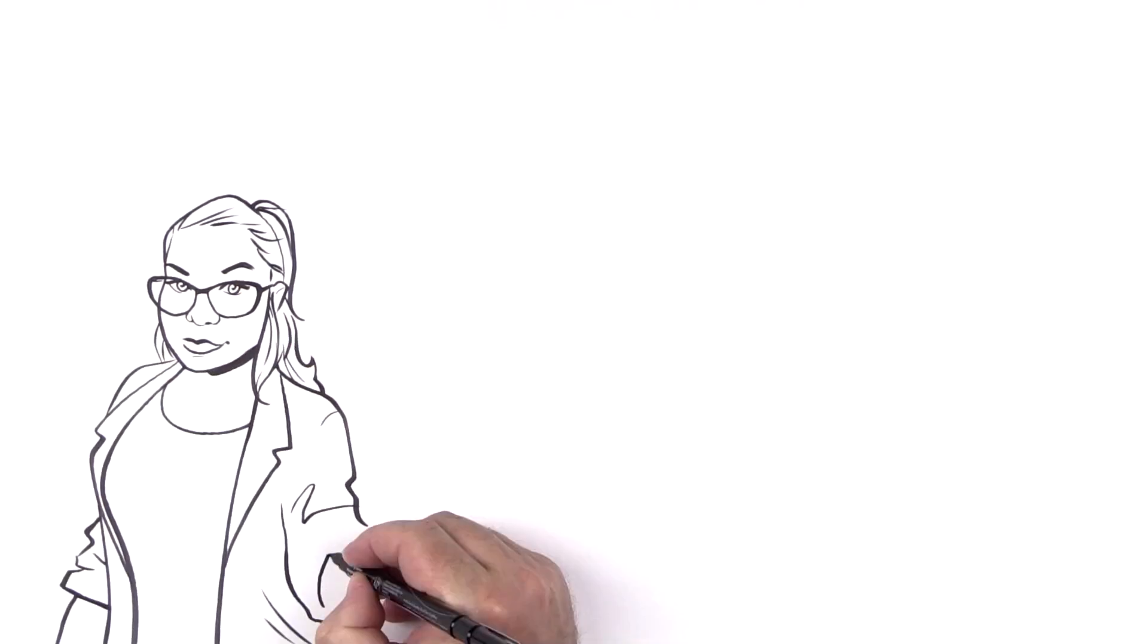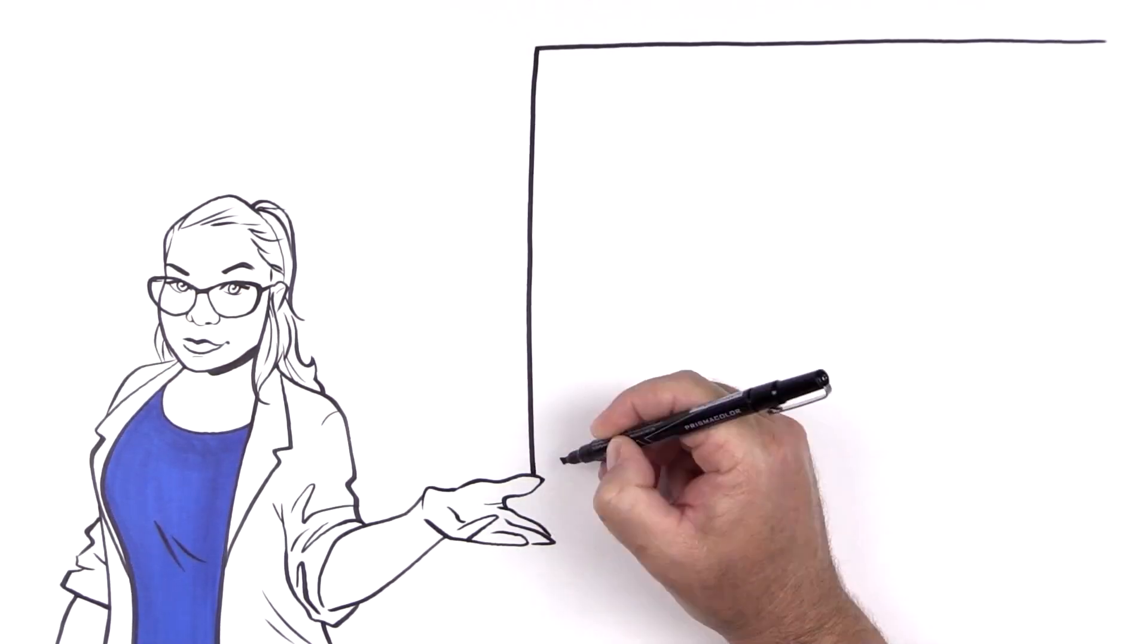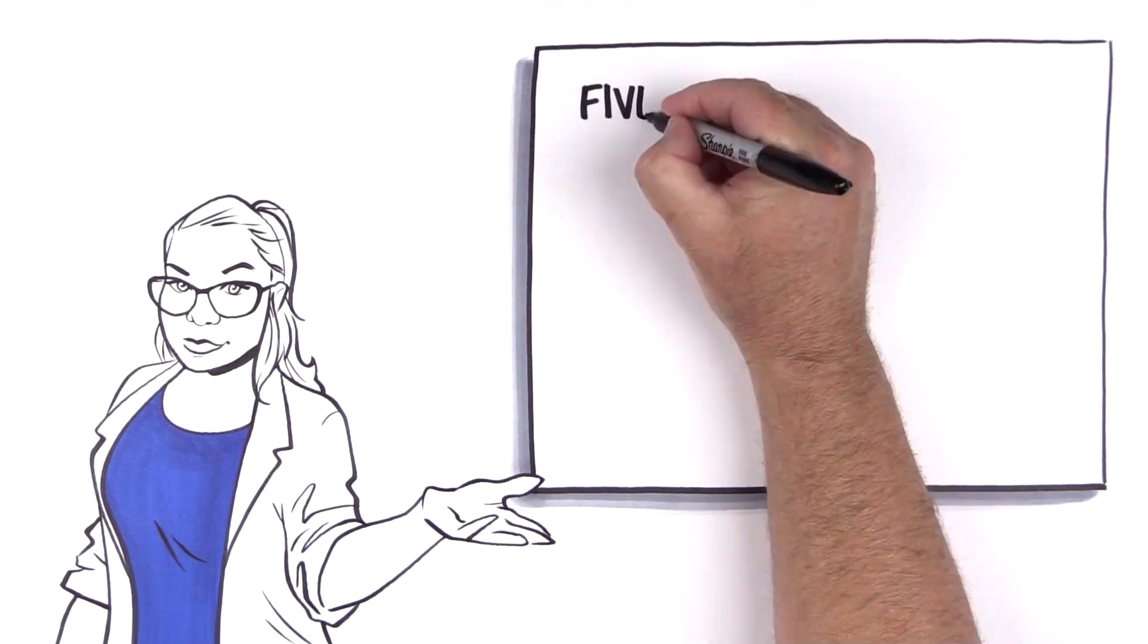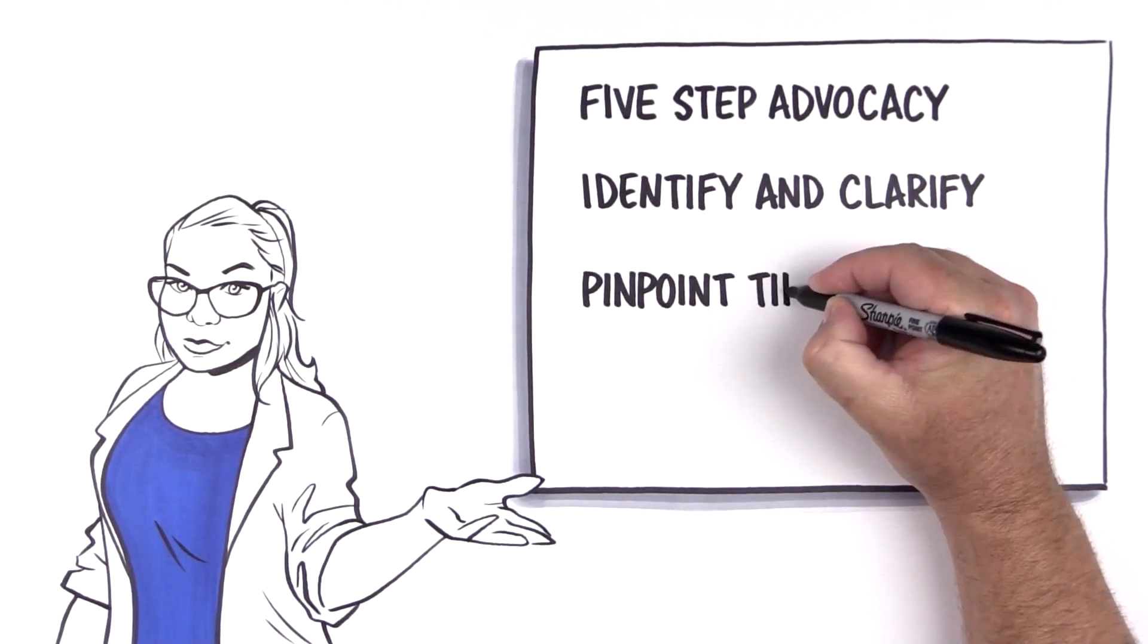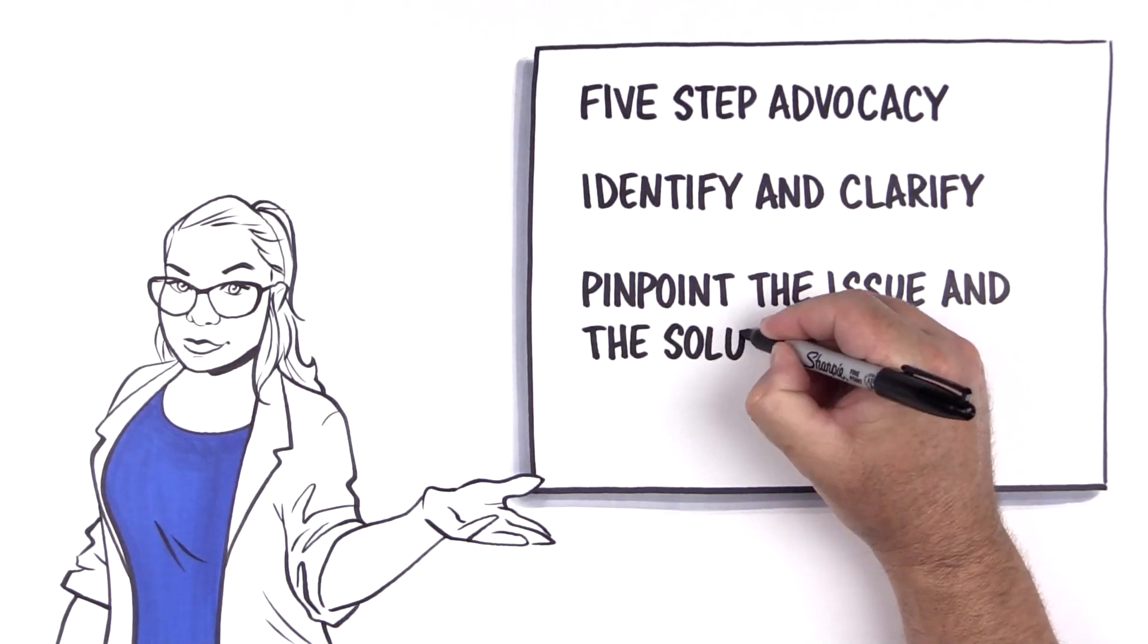I'm just going to go over the five steps of advocacy and explain how all of that would work. So the first step is identify and clarify. What is the issue and what is the solution?